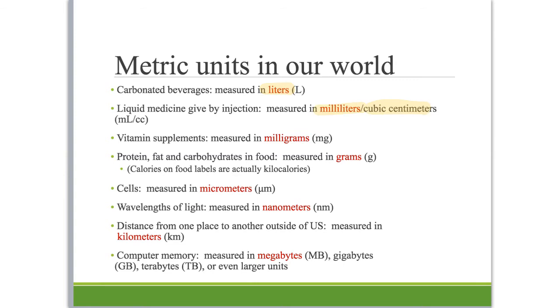If you take a vitamin pill and read the label, you'll see vitamins and minerals listed in milligrams. On foods in general, protein, fat, and carbohydrate values are measured in grams. Incidentally, the calories we see on food are actually kilocalories from a scientific standpoint. Cells are measured in micrometers, and wavelengths of light are measured in nanometers—there are 1,000 nanometers in one micrometer.